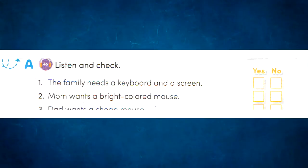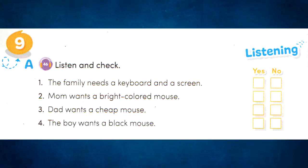Listen. My family is going to the computer store today. We need to buy a new computer keyboard because our old keyboard is broken. We also need a new mouse. My mom wants a tiny mouse. The second mouse is tiny. My dad wants a cheap mouse. The third mouse is big, but it's the cheapest. I want a bright orange mouse, so I like the first one. It's also the tiniest, so it will be easy to use. I hope we get it.